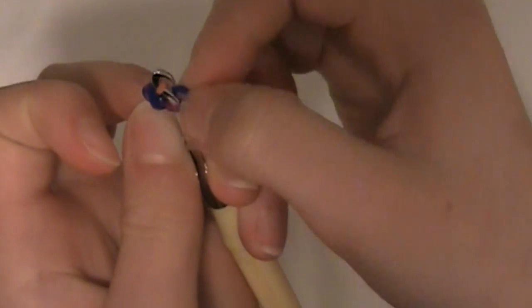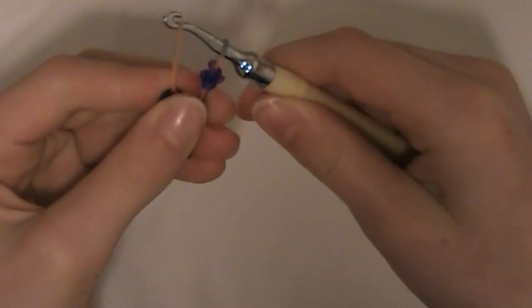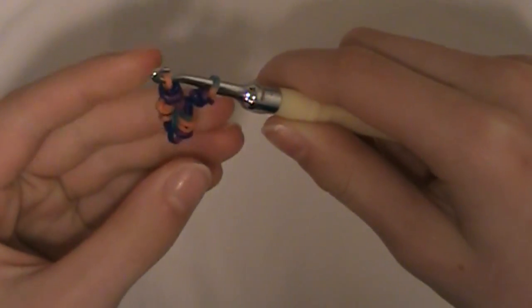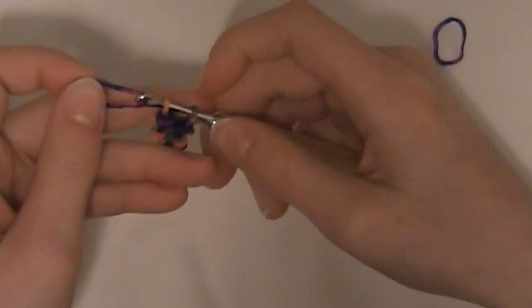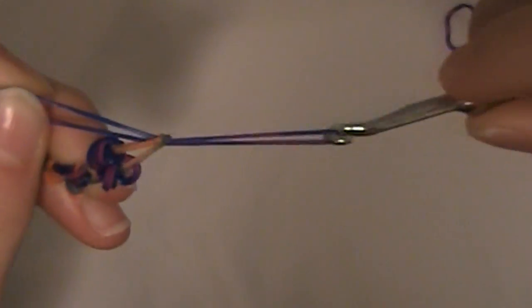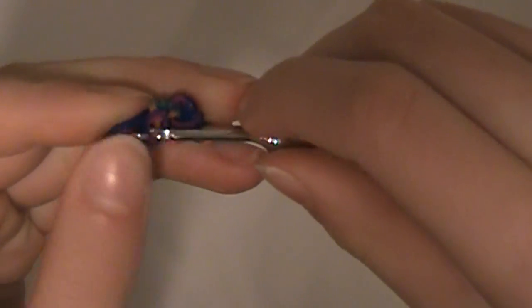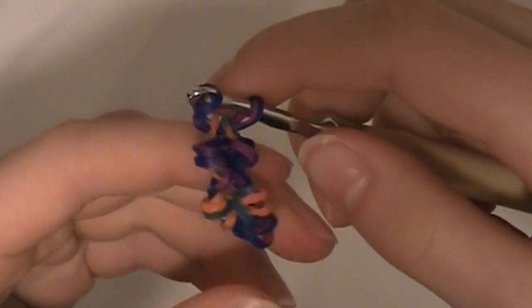Oops. I see I missed one loop. So if you do that, you can just pull that one loop back over. Alright. And I'm going to take my color and put it on the end like so. And pull it through like that. Put the other end back on.